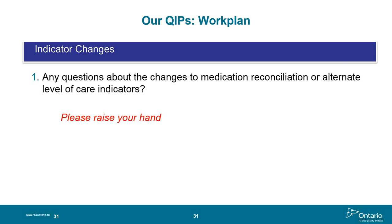Regarding the ALC indicator: when we move forward in 2016-17, it will be exactly as it appears on the hospital services accountability agreement. If there are two separate indicators there, it'll be two separate indicators on the QIP, but it's believed to be all one.